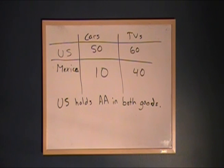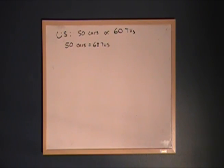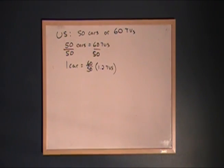When finding a comparative advantage, we need to find who holds an opportunity cost advantage. First, let's figure out the opportunity cost of cars and TVs in the United States. We know the United States can produce either 50 cars or 60 TVs with a single worker. To solve for cars, we need to divide both sides by the number of cars being produced — that is, divide both sides by 50. That tells us the opportunity cost of one car is 60/50, or 6/5, or about 1.2 TVs.